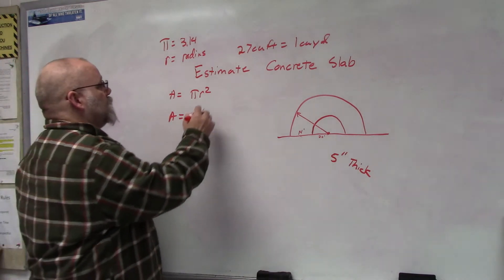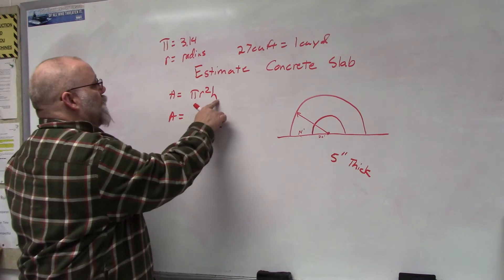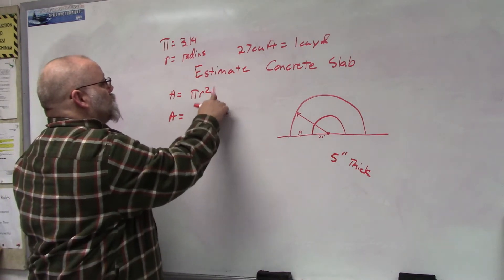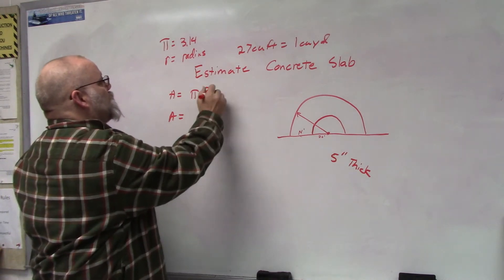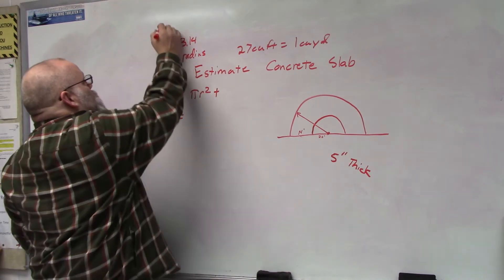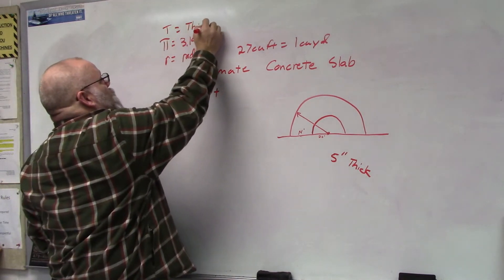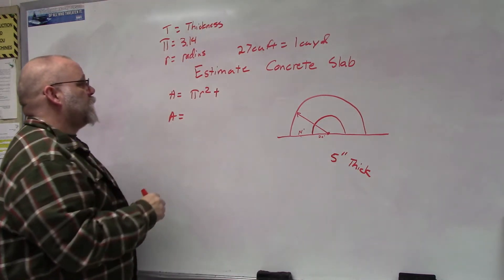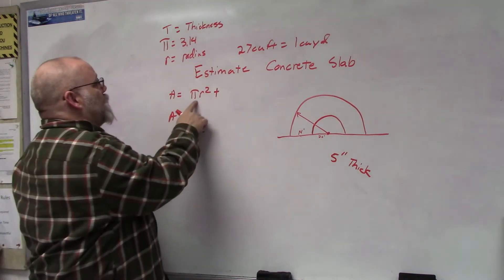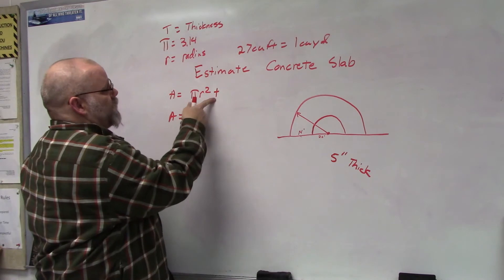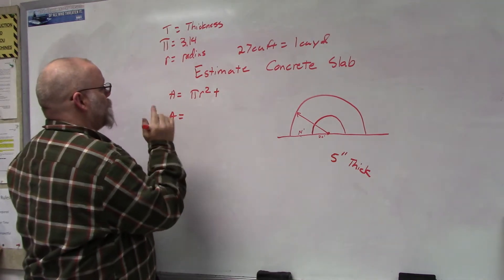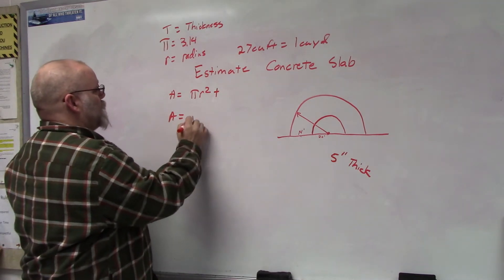The numbers that we have now: let's go with t, so t equals the thickness. We've got πr² times the thickness.